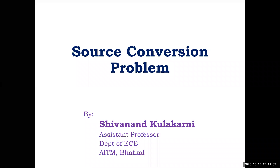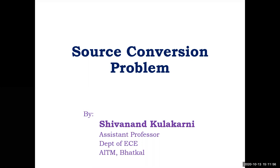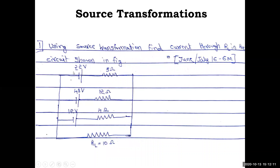Dear students, welcome to the course Network Theory. In the previous video I discussed the concepts of source transformations — basically three methods: source with equivalent terminal characteristics, source conversion, and source shifting. Today we will discuss the first variety of source conversion and solve two problems based on that. Have a pen and paper and try to solve along with me.